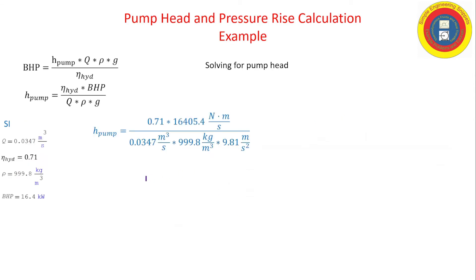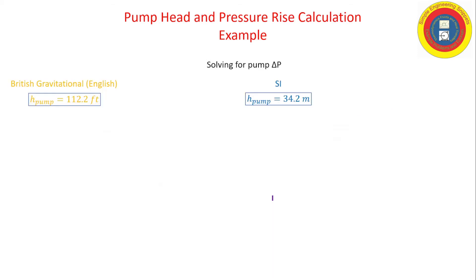And now let's work in SI. Again, plugging in the parameters and units, it's a little bit cleaner. I chose to expand the definition of a newton; typically you don't have to do that. And we get that the head of the pump is 34.2 meters. Okay, so that's the pump head in both systems of units.